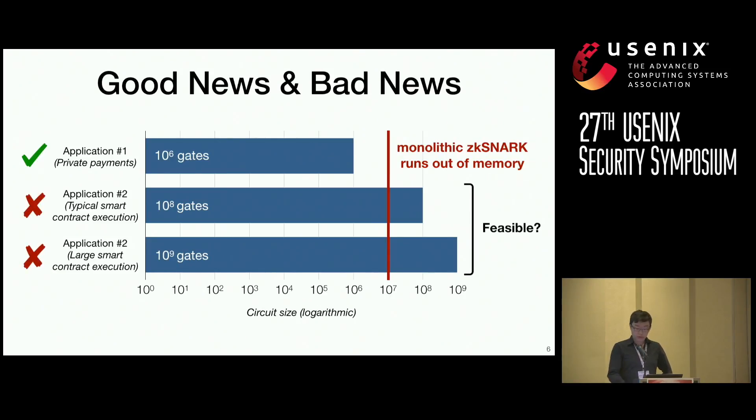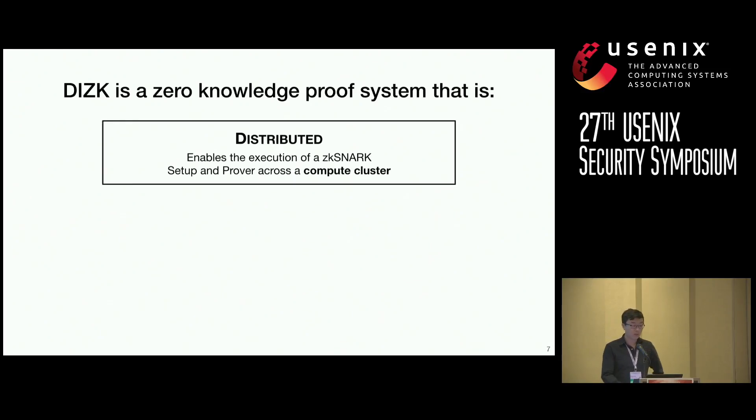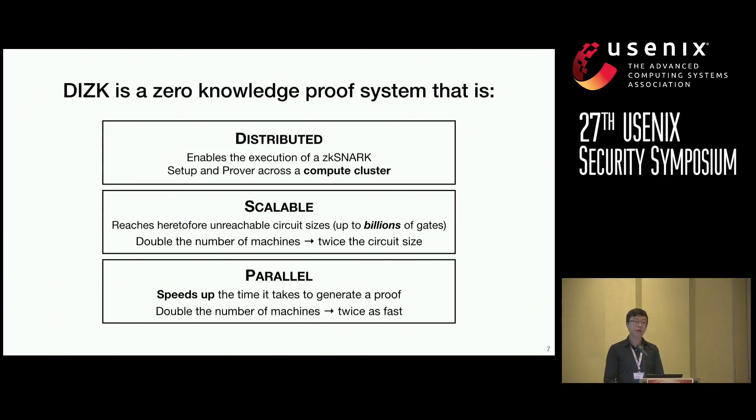And so we designed DIZIK. DIZIK is a zero-knowledge proof system that is one, distributed, meaning it enables the execution of a ZK-SNARK setup and prover across a compute cluster. Two, it is scalable, meaning that it reaches heretofore unreachable circuit sizes up to billions of gates. And the pattern that we see here is that as we double the number of machines, we can support approximately twice the number of circuits. And lastly, it is parallel, meaning that we can speed up the time it takes to generate a proof. And the pattern that we see here is that as we double the number of machines, the proof generation itself runs at approximately twice as fast.